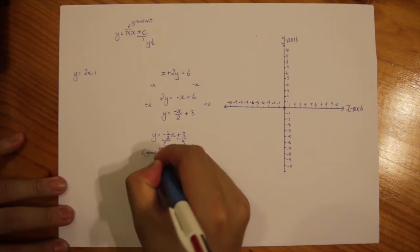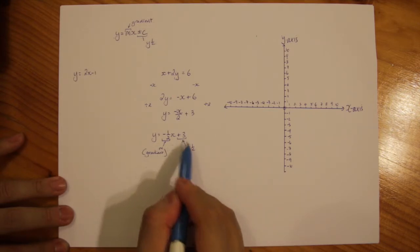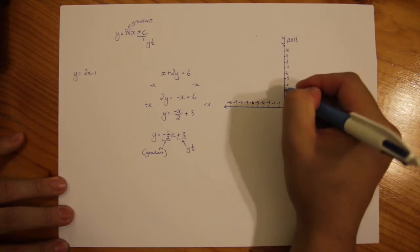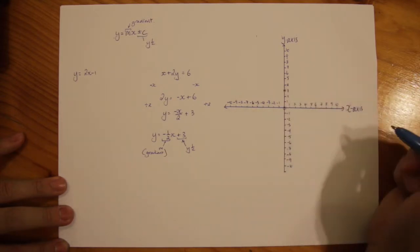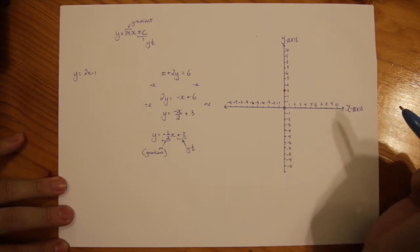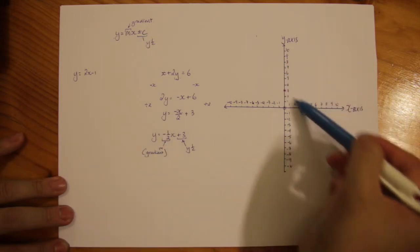So what I can do automatically is if 3 is my y-intercept and 3 is over here, I know that the line is going to cut across that point. I know also that the gradient here is a negative gradient, so I know it's going to go down.